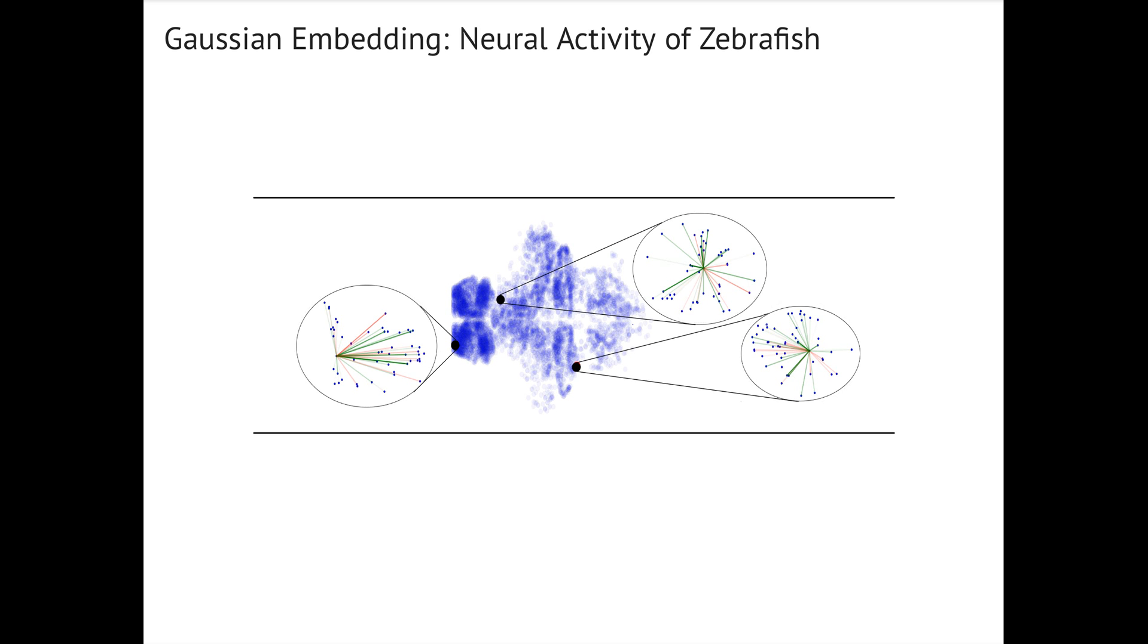For example, this is the top view on a zebrafish brain. The blue dots are the neurons. We used a Gaussian embedding model to model each neuron's neural activity, using surrounding neurons as the context.